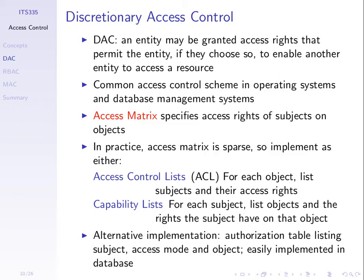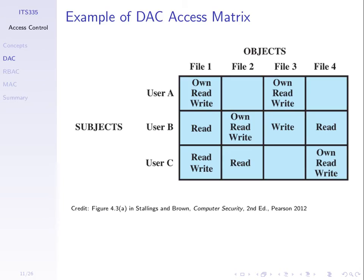With discretionary access control, there are some access rights specified at the start when the system is deployed. Some administrator specifies initial access rights—what a subject can do with different objects. That can be specified via different means. We can think of it as a matrix which specifies what subjects can do with what objects. The things they can do are referred to as access rights, or sometimes with respect to files, modes—modes in which we can access the file. Read, write, execute, and own are examples.